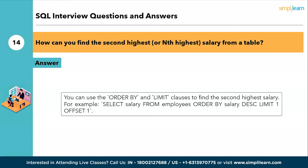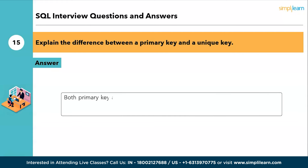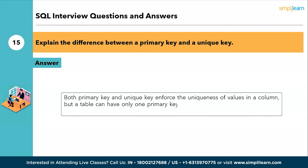The fifteenth question: explain the difference between a primary key and a unique key. Both primary key and unique key enforce the uniqueness of values in a column. However, a table can have only one primary key, whereas it can have multiple unique keys.